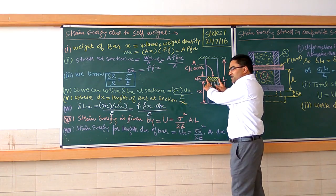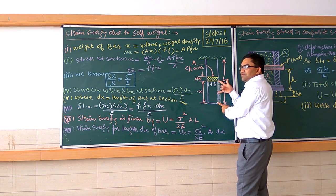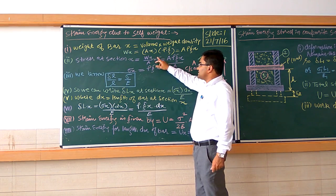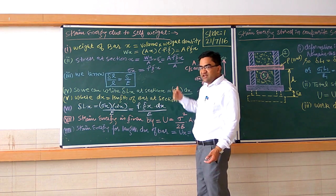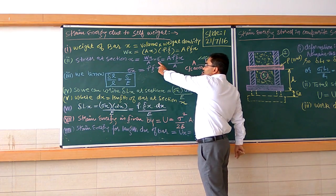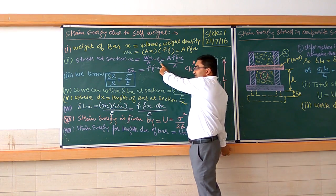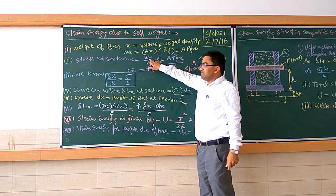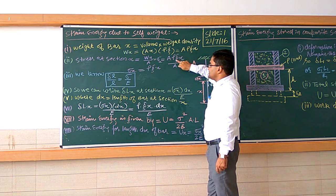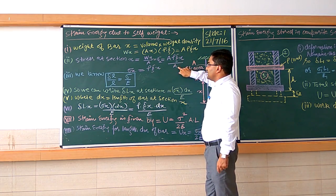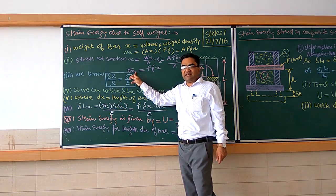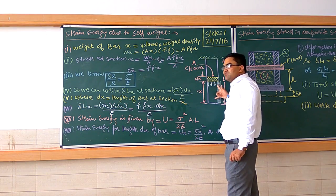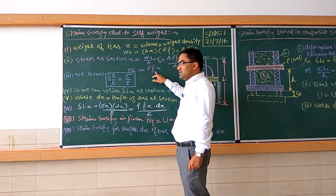How much stress is being developed in this strip due to this weight up to the length x? That can be calculated as load divided by area. Load means the weight W_x upon area. The cross-sectional area is uniform throughout the bar. So σ_x, the stress induced in this strip, is W_x / A = ρ·g·x. So σ_x = ρ·g·x.